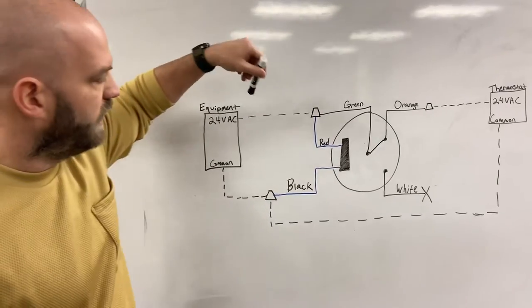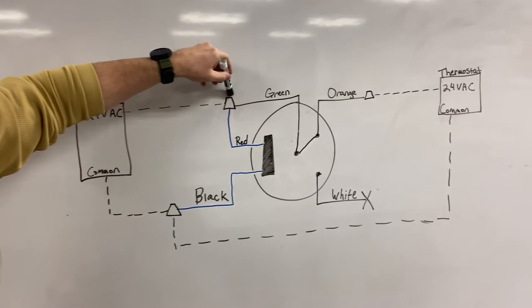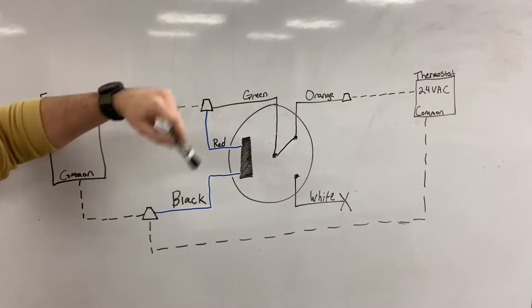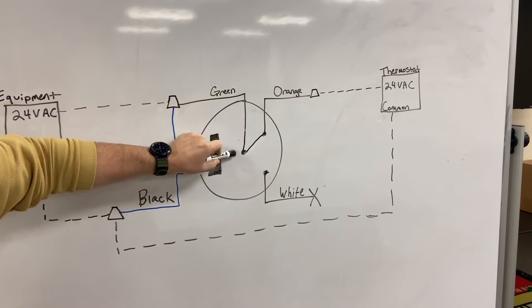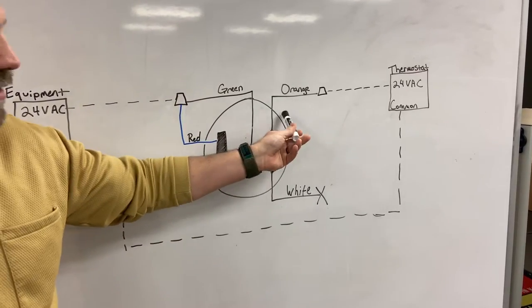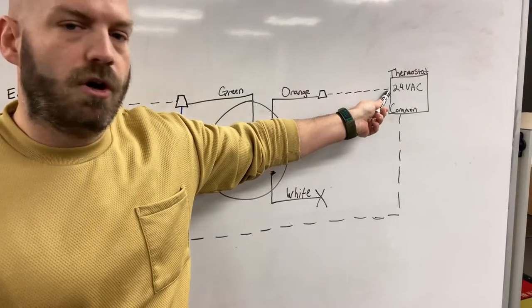So if we come in here, we're going to look at the first circuit coming off the R of the equipment. It comes through and pigtails with the red and the green, but let's follow that green. This green comes in and goes to our normally closed switch. While it's closed, it's going to allow 24 volts to go through our orange wire that's then pigtailed in to our R terminal on the thermostat.